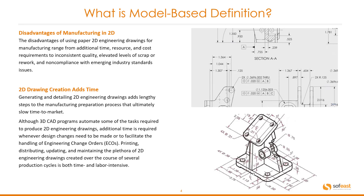The disadvantages of using paper 2D engineering drawings for manufacturing range from additional time, resources and cost requirements, to inconsistent quality, elevated levels of scrap or rework, and non-compliance with emerging industry standard issues.